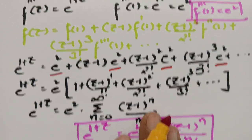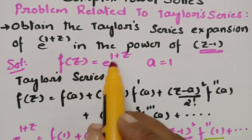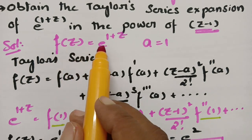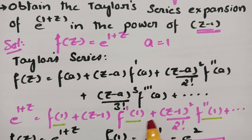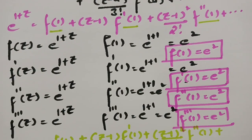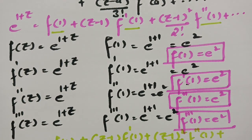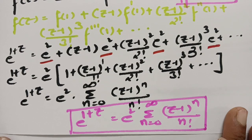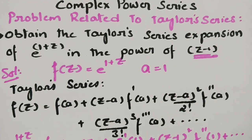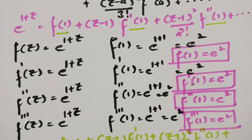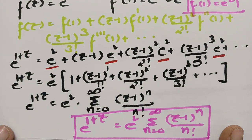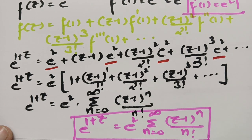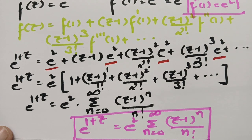This is the Taylor series expansion for e power 1 plus z, written as e square times sigma n equals 0 to infinity of z minus 1 power n by n factorial. First, take f of z as e power 1 plus z and a equal to 1. Calculate f of 1, f dash of 1, f double dash of 1, f triple dash of 1 — all equal to e square. After substituting, take e square common and write the sigma notation. You can take a screenshot for notes. Please practice and thank you for staying till the end.